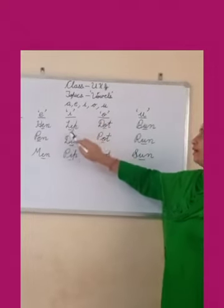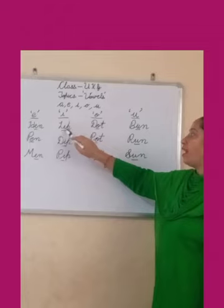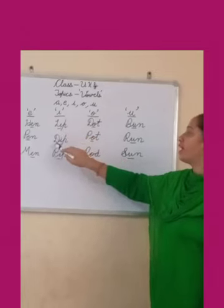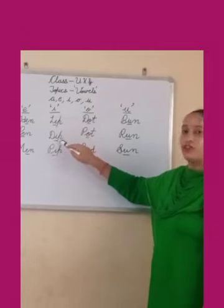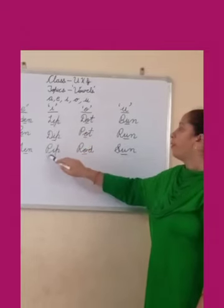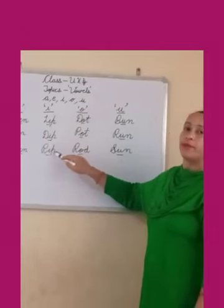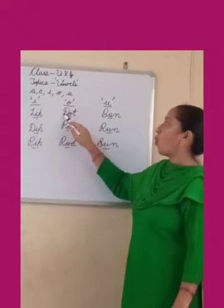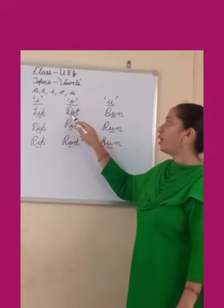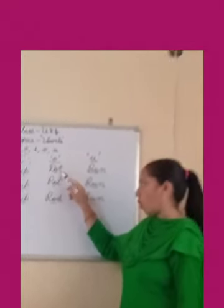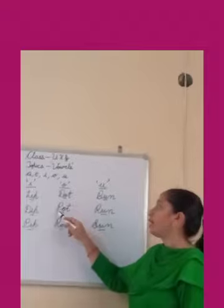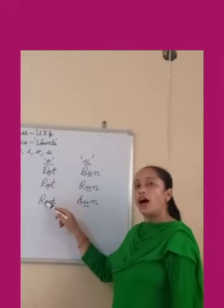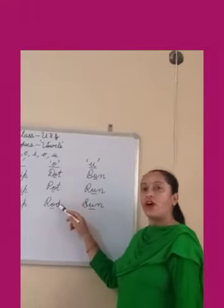Vowel I: LIP, DIP. Vowel O: DOT, POT, ROD.